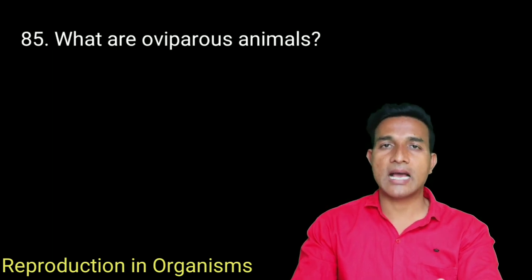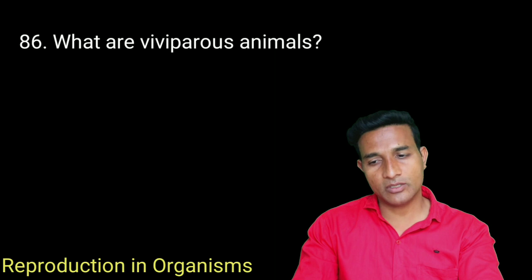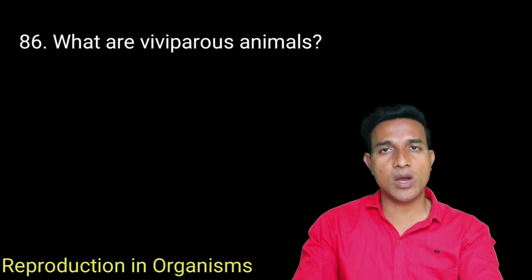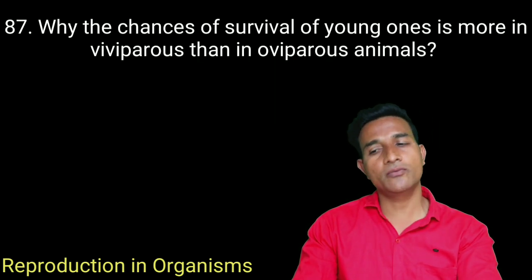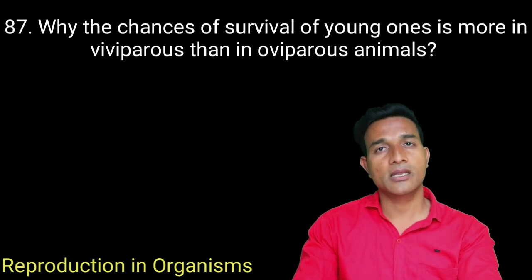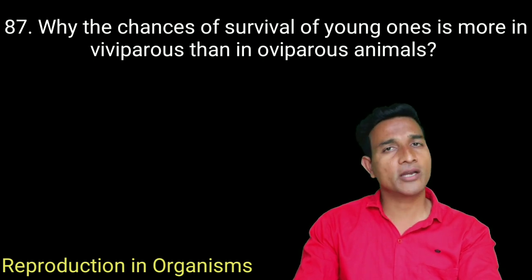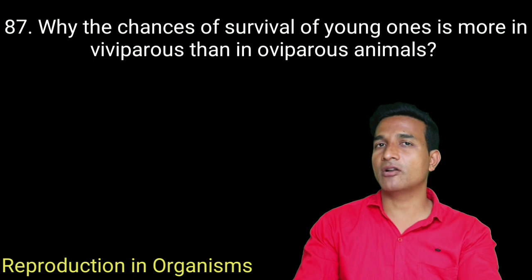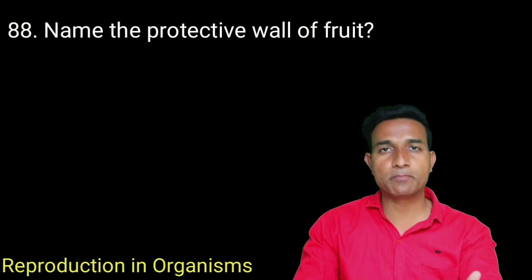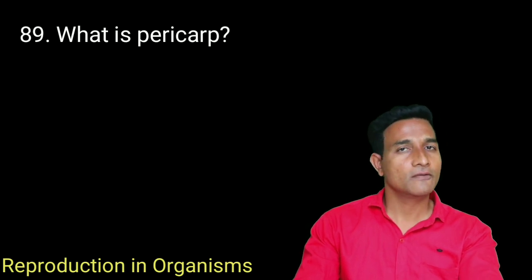What are oviparous animals? Animals which lay eggs are called oviparous animals. What are viviparous animals? Animals that give birth to young ones are called viviparous. Why do young ones have better survival chances in viviparous animals than in oviparous? Because in viviparous animals there is proper embryonic care and protection, which is not found in oviparous. Name the protective wall of the fruit — it is pericarp. Pericarp is the protective wall of the fruit.